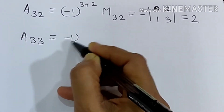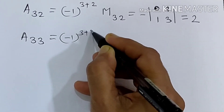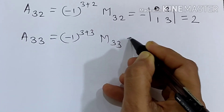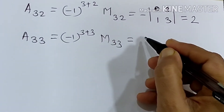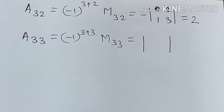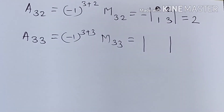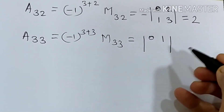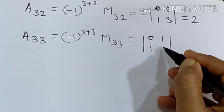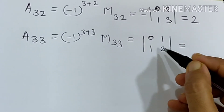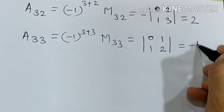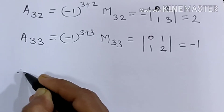The last element is A33, equal to minus 1 raised to 3 plus 3, into M33. The power is even, so positive of the determinant. Deleting the third row and third column gives elements 0, 1, 1, 2. That equals 0 minus 1, therefore minus 1.